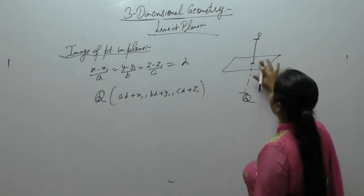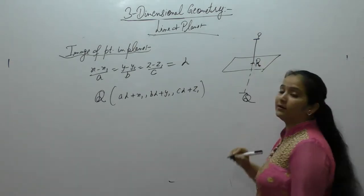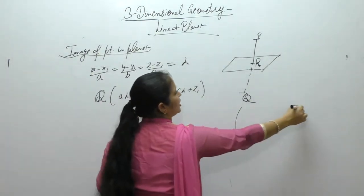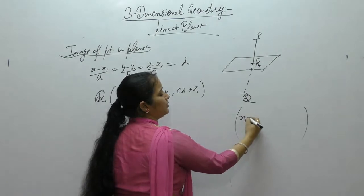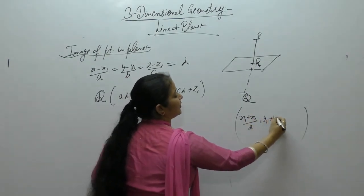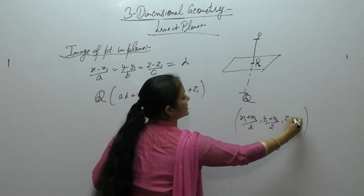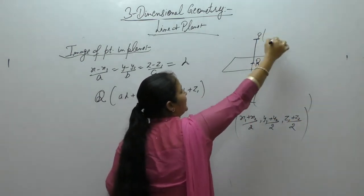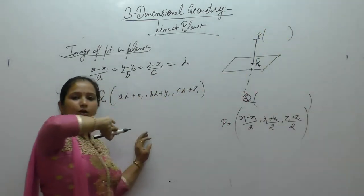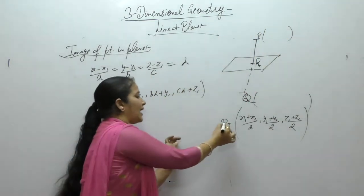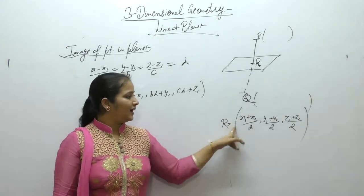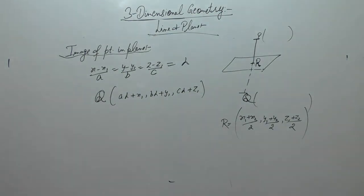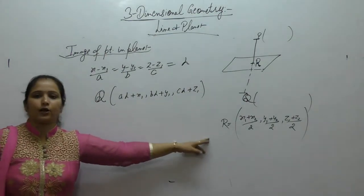Find the coordinates of midpoint. Let it as M or R. Midpoint formula: Coordinates of P plus coordinates of Q. X1 plus X2 by 2, Y1 plus Y2 by 2, Z1 plus Z2 by 2. We have Q's coordinates. This is given point, which coordinates we have. So, R coordinates we will find. X1 plus X2 by 2, Y1 plus Y2, Z1 plus Z2.